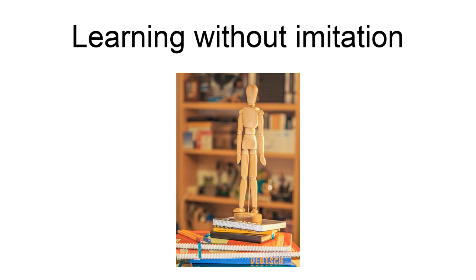Goal emulation involves individuals being enticed by the end result of an observed behavior and attempting the same outcome by a different method. For example, Haggerty (1909) devised an experiment in which a monkey climbed a cage, stuck its arm into a wooden chute, and pulled a rope to release food. Another monkey, after watching this process on four separate occasions, performed a different method and finally succeeded after trial and error.